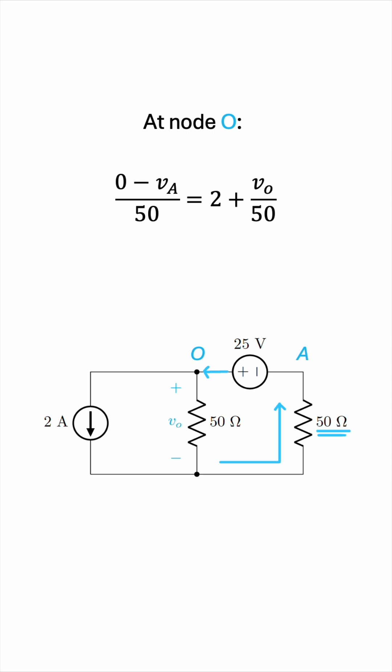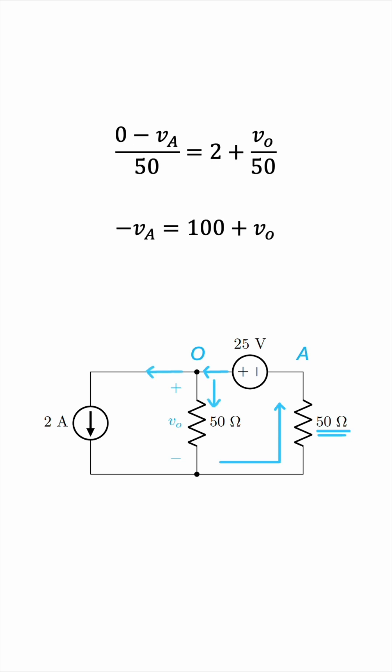So that's it. This is the current entering the node and we have the two currents leaving the node. Let's simplify this equation by multiplying everything by 50 to clear the denominators, and this gives us the following. So we have one equation but two unknowns, because va and vo are both unknown to us. So how do we find vo, the objective of the question?